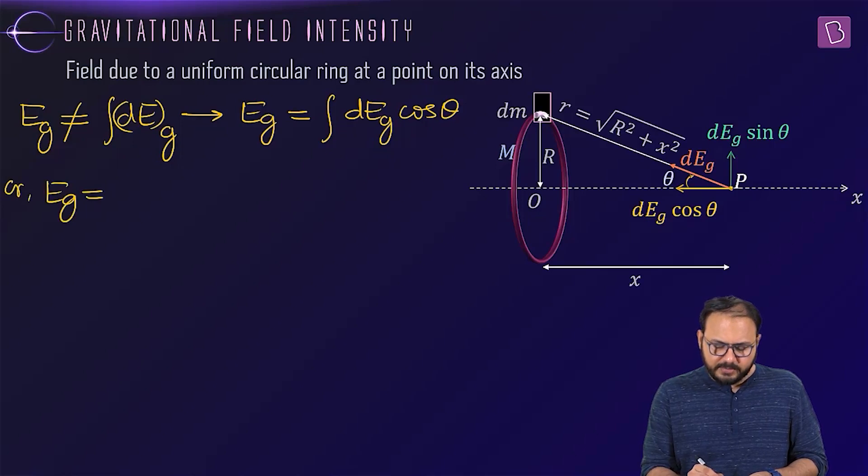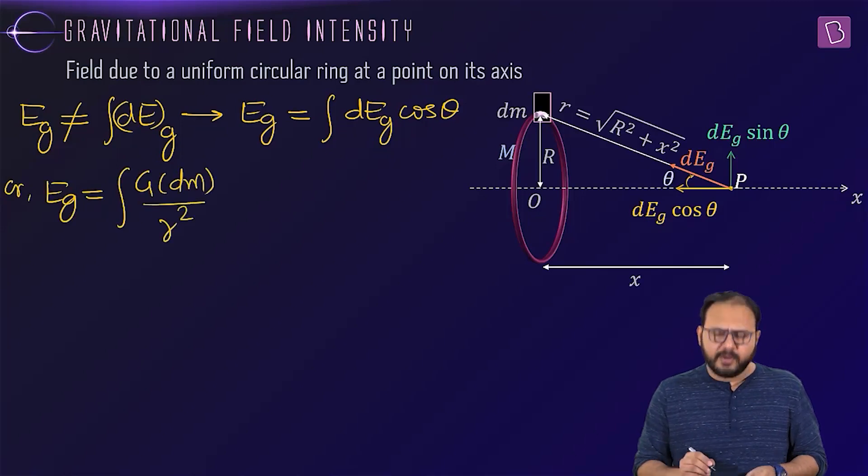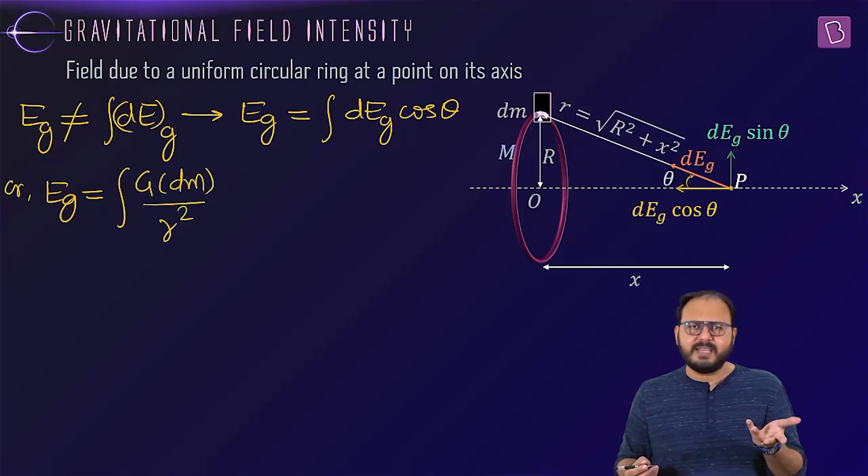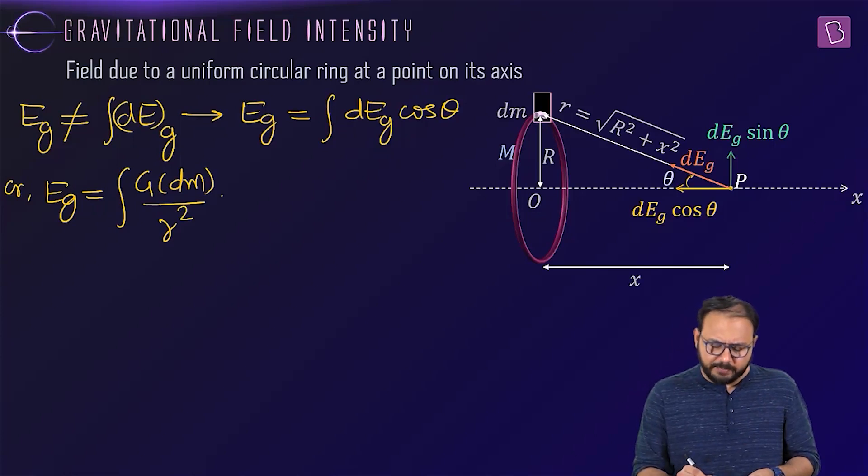So your Eg becomes integration, sir. What is dEg? dm by r square. You know what? Let it be r right now. It's anyways a constant. Let it be r. What is cos theta? Pray tell. Sir, cos theta is base upon hypotenuse. So it's x upon r, sir. Very good.